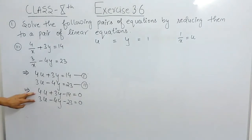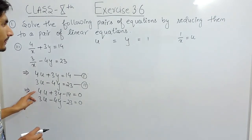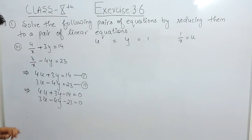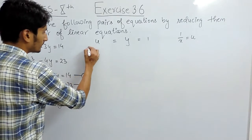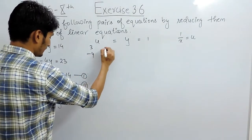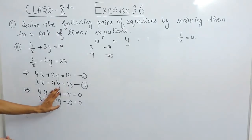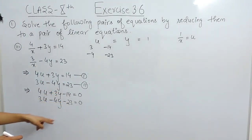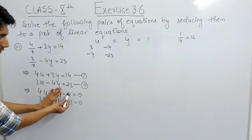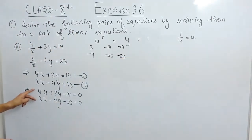This will be our standard equation. When we are using the cross multiplication method, you write u equals to y equals to 1. For u, you have to ignore u and write the other constants: 3 and minus 4. The other constants are minus 14 and minus 23. For y, you have to ignore the value of y and write the other two constants, and this will be cyclic — when ignoring y, write minus 14 and minus 23 first, and after that 4 and 3.